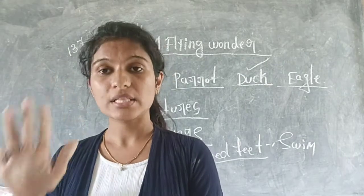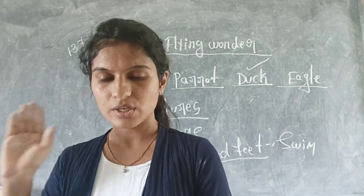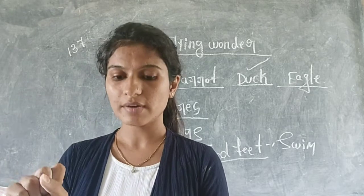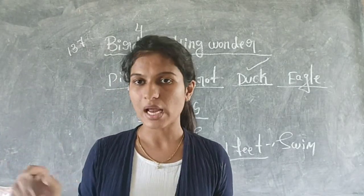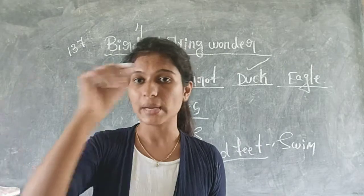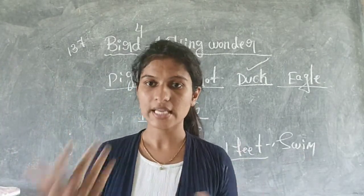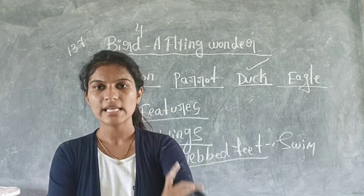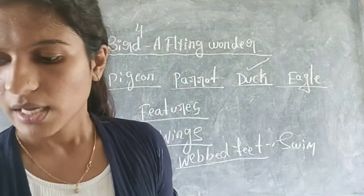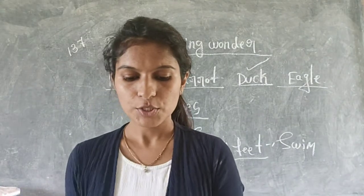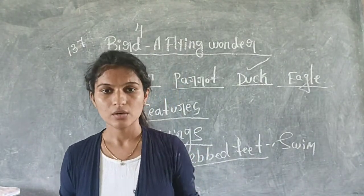Next, feathers are there. Then legs are there, and feet and tail. The tail is there in all birds. But the bird's tail is very different - I will tell you about that in the next class. So these are the basic structures of a bird.